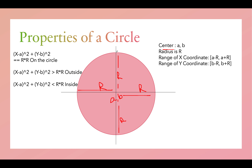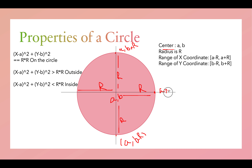Let's write all the extreme coordinates of the circle. The topmost point is (a, b+r), the bottom one is (a, b-r), the rightmost is (a+r, b), and the leftmost is (a-r, b).